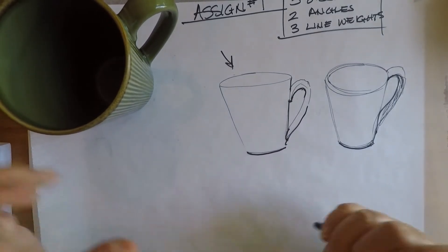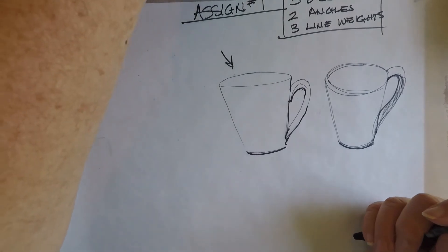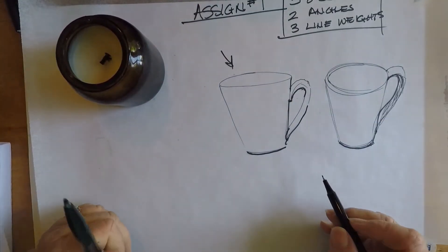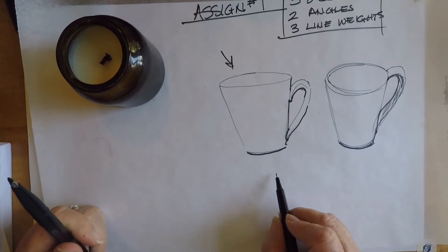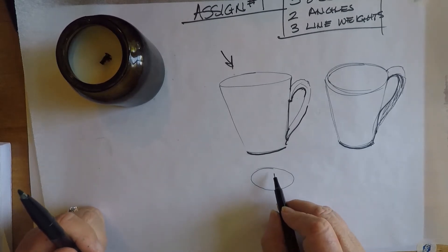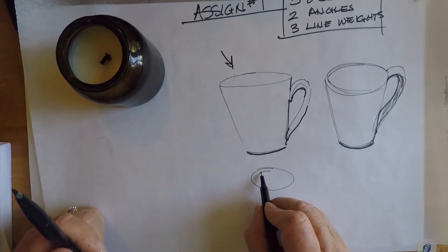Okay, so you can pick a fairly simple object too. So same thing, I'm going to look at it and try to do a top that's a lighter pressure. And then I can see it's got a thickness to the rim.